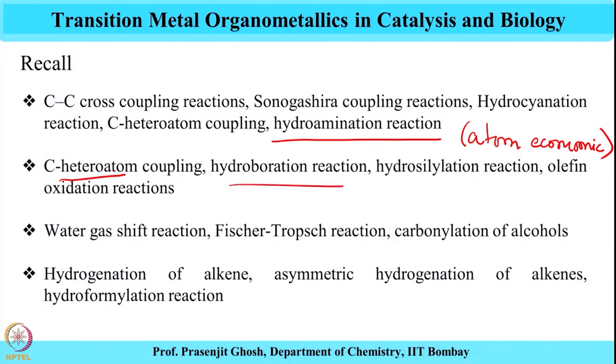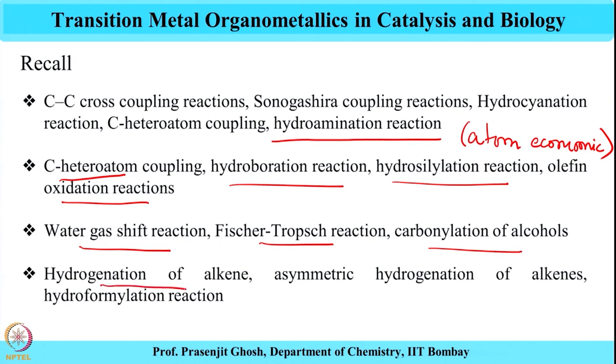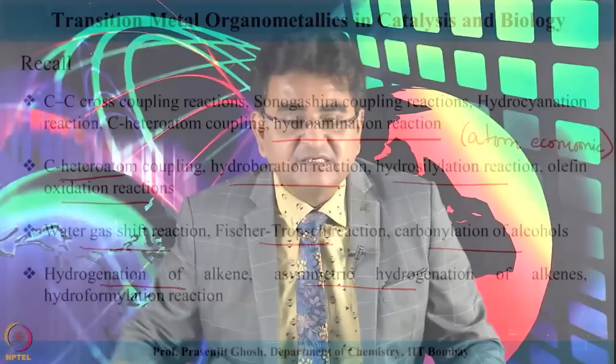Along the same line, we have looked into other very useful applications of transition metal organometallic chemistry: carbon-heteroatom coupling, hydroboration reactions, hydrosilylation reactions, and olefin oxidation reactions. We have also looked at important industrial processes like the water-gas shift reaction, Fischer-Tropsch synthesis, and carbonylation of alcohols, as well as hydrogenation reactions and their asymmetric forms — all as part of the applications of transition metal organometallic chemistry in chemical catalysis.